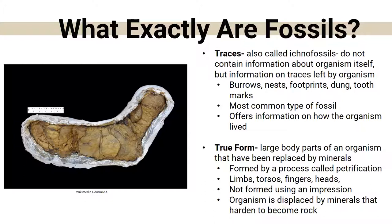True form fossils are large body parts of animals that have been replaced by minerals — limbs, torsos, fingers, heads. The organism is basically displaced by those minerals and hardens to become rock. The image shown is a coprolite — that's just fossilized poop or dung. It kind of even looks like that.